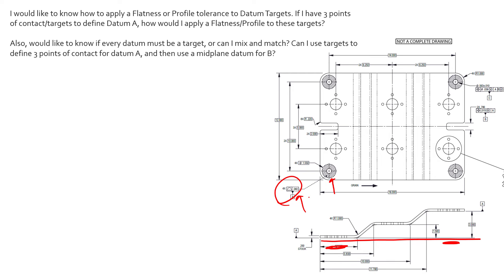If you're operating on the 2018 standard, you can use a continuous feature with flatness — a similar interpretation — where you only check form in these four areas, and that becomes your datum. It's very useful to draw the area directly on the drawing and only take measurement points or simulate within that area.